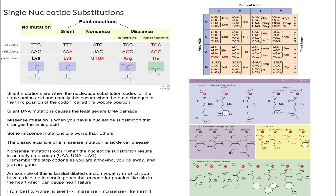The best mutation to have is silent because it doesn't affect the amino acid. Next is missense, then nonsense, and then frameshift. A frameshift is a deletion of one nucleotide that messes up everything afterwards. To summarize: silent mutations give the same amino acid; missense mutations change the amino acid; nonsense mutations change the amino acid to an early stop codon; and frameshift mutations delete a nucleotide and disrupt everything after it.